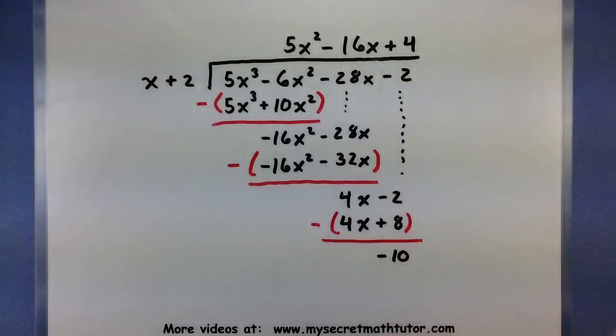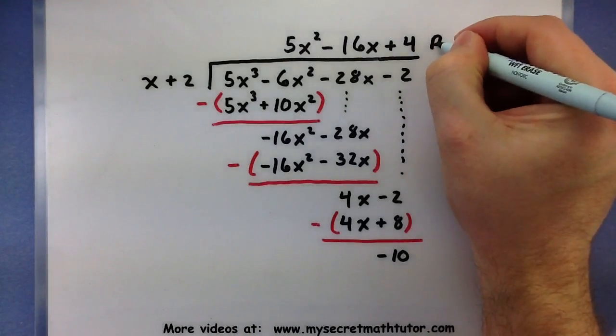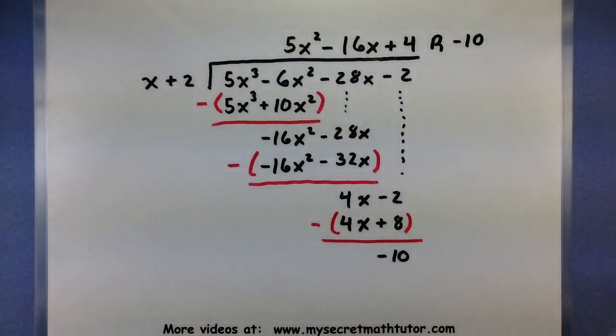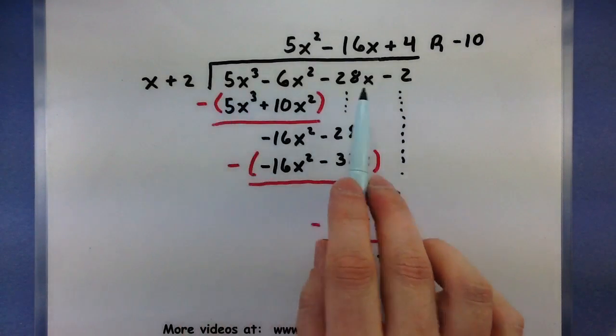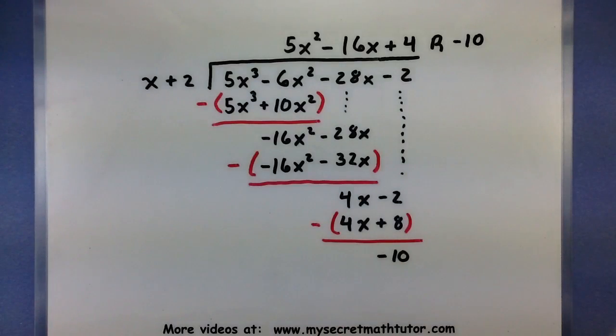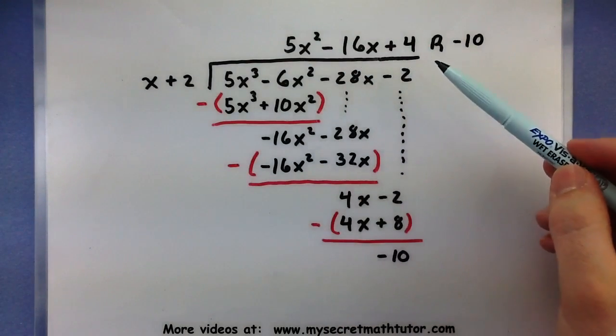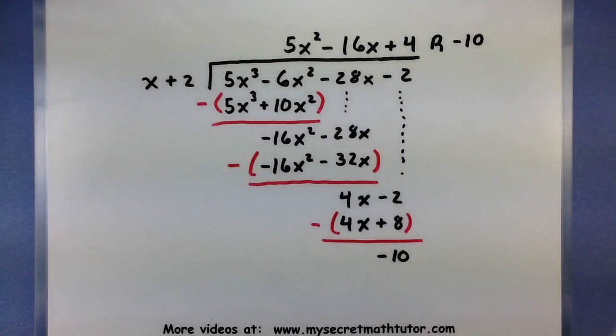So since this is now lower in power than what I'm dividing by, so it's only like x to the 0, this is considered my remainder. So what we have found is that when we take our original polynomial and we divide by x + 2, we get the answer 5x² - 16x + 4 with the remainder of -10.